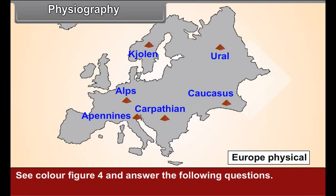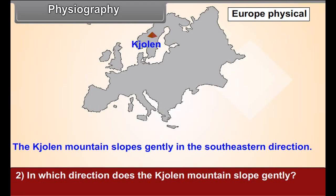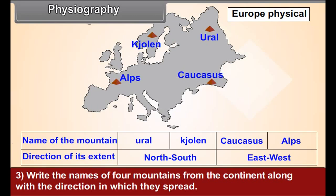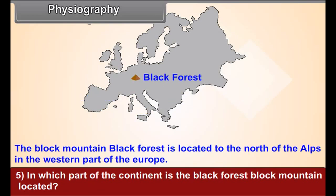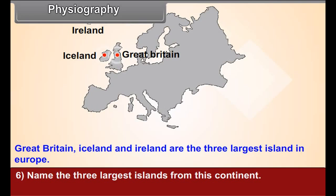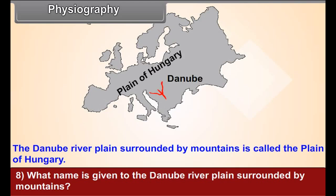See color figure 4 and answer the following questions: 1. What physiographic region is seen between the northern and southern mountains? 2. In which direction does the Jolene mountain slope gently? 3. Write the names of 4 mountains from the continent along with the direction in which they spread. 4. List any 5 peaks from the continent along with their height in descending order. 5. In which part of the continent is the Black Forest block mountain located? 6. Name the three largest islands from this continent. 7. Where is the distance between the continents of Europe and Africa the least? 8. What name is given to the Danube river plain surrounded by mountains?